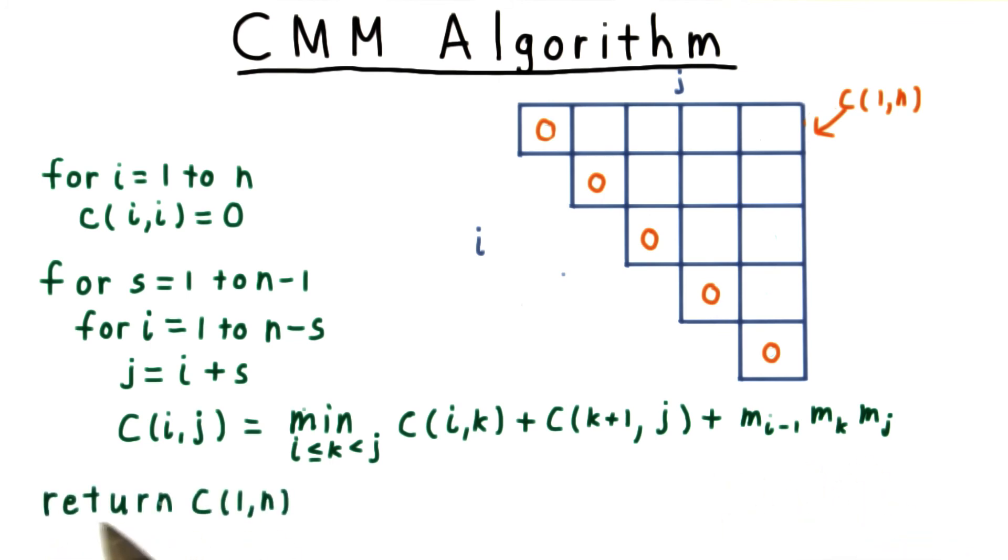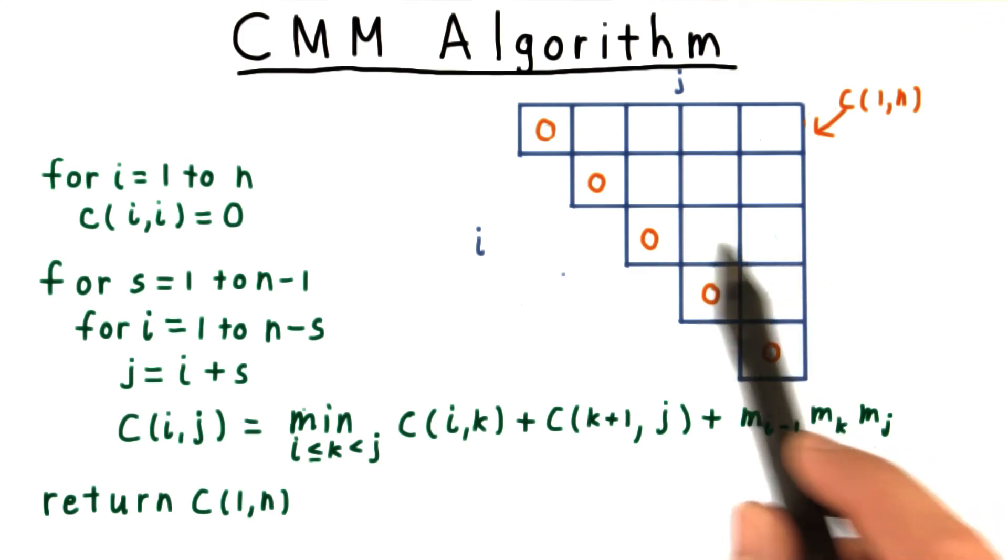The last step, of course, is just to return this final cost. The binary tree that produced this cost can be reconstructed from the k that were chosen that yielded these minimum values. We just need to remember the split that we used for each entry in the table.